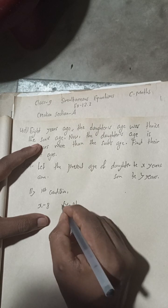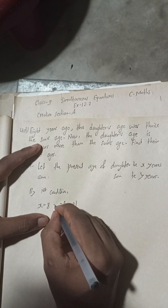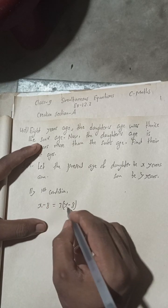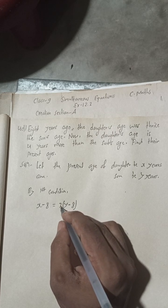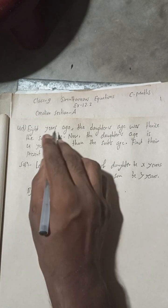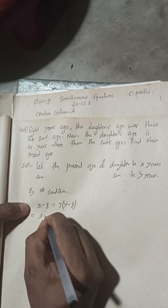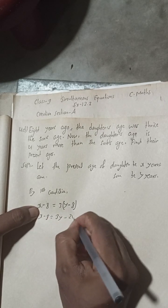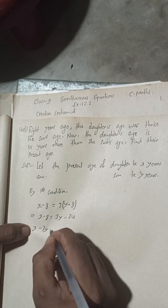Thrice means three times the son's age. So the daughter's age x minus 8 equals 3 times the son's age y minus 8. That gives us: x minus 8 equals 3 times (y minus 8), which is 3y minus 24.